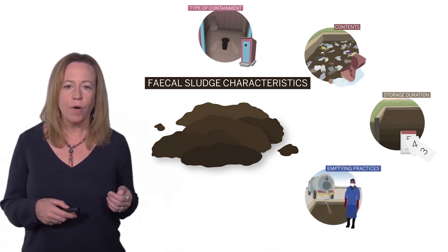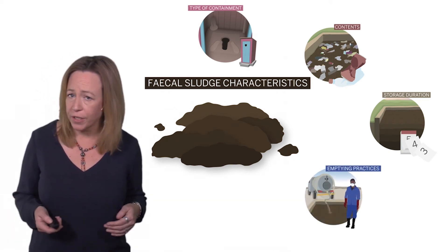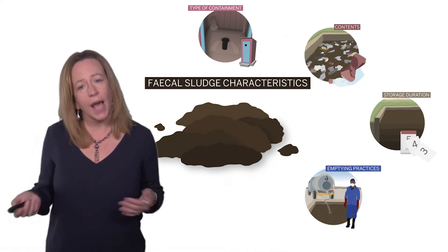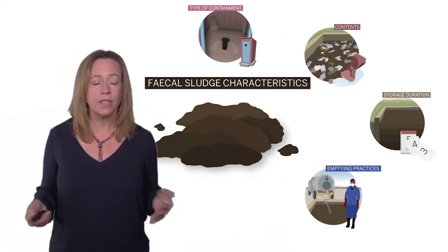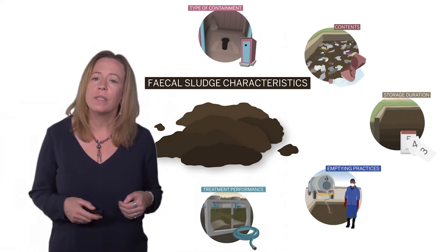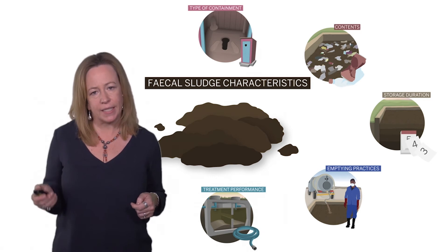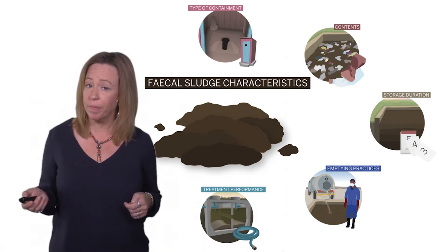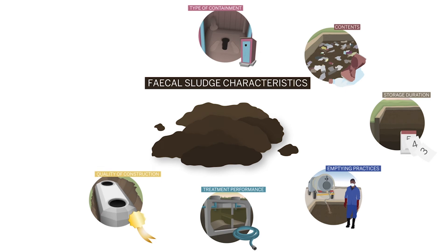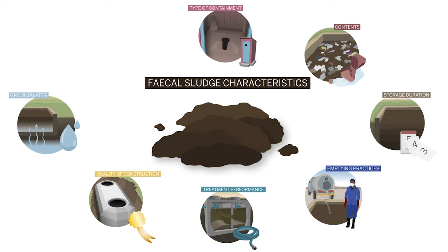Also, how was it emptied? Was it fully or partially emptied? Was water added to help remove the sludge? These are emptying practices. Characteristics are also affected by whether technologies are performing as designed — this is treatment performance — and how well technologies were constructed: are they lined or unlined, are they really watertight? This is quality of construction. Additional factors include infiltration or inflow from groundwater, and temperature, which affects rates of degradation.